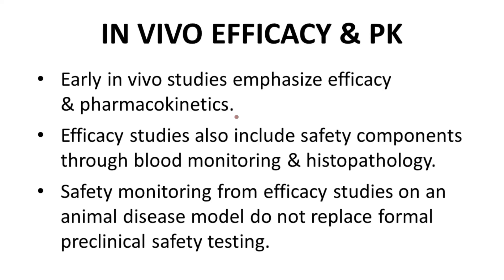A common example would be to monitor liver enzyme levels — ALT and AST — periodically during an efficacy study to also check on possible liver inflammation or damage because of the compound being tested. Likewise, upon completion of the study, histopathology studies on the animals will allow examination of organs for appearance and size and even biopsy for detection of any damage or abnormalities. While these types of preliminary studies are very informative and useful, they do not replace formal preclinical safety testing to satisfy regulatory requirements in anticipation of starting human trials.